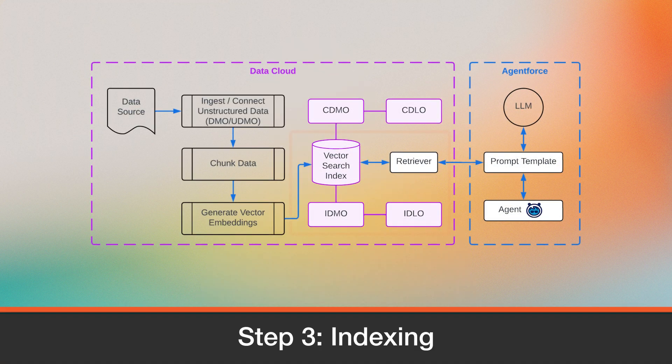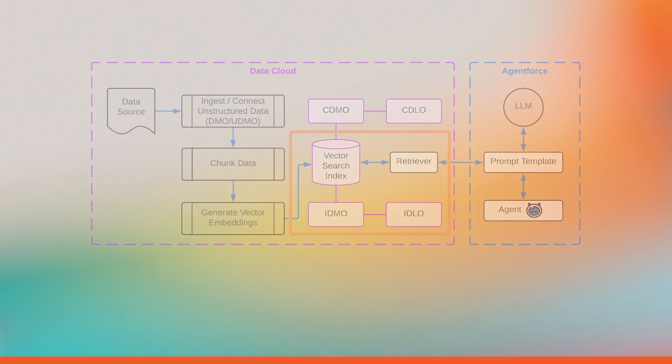Finally, these embeddings are stored in a vector search index, specifically in index data lake objects, or IDLOs, with fields mapped to index data model objects, or IDMOs. These indexes are what retrievers query during semantic search. So that's how unstructured data is processed in Data Cloud, from raw content to structured, searchable vectors.